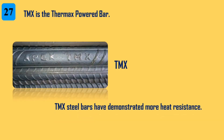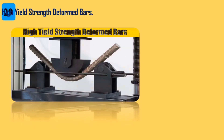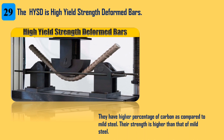27. TMX is the thermax processed bar. TMX steel bars have demonstrated more heat resistance. 28. SD is super ductile bars — which have a perfect combination of strength and ductility for use in earthquake zones. 29. HYSD is high yield strength deformed bars. They have a higher percentage of carbon compared to mild steel, and their strength is higher than that of mild steel.